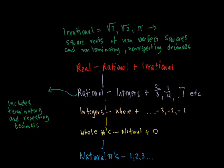From there, we have the rational numbers. And the rational numbers are all the integers plus any number you can write as a fraction of an integer over an integer. For example, like 2 thirds. 2 is an integer, as is 3.